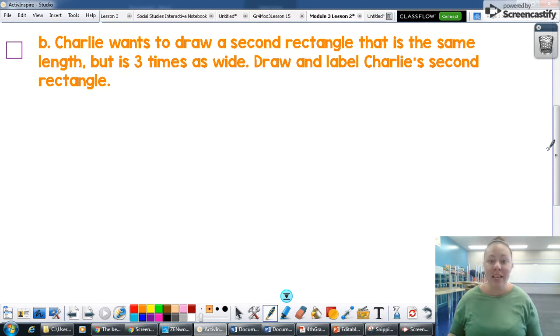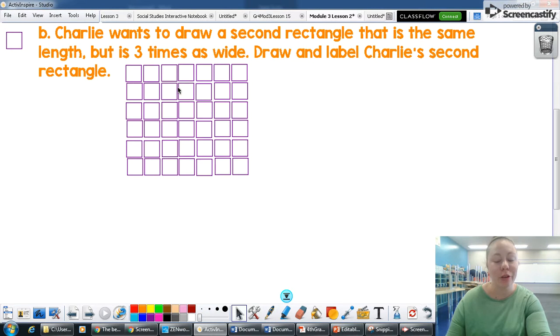Now to the second part of the problem. Charlie wants to draw a second rectangle that is the same length, but three times as wide. So I need to draw and label Charlie's second rectangle. So I went ahead and put the same array that I had because he wants to draw a second rectangle that's the same length, but three times as wide.